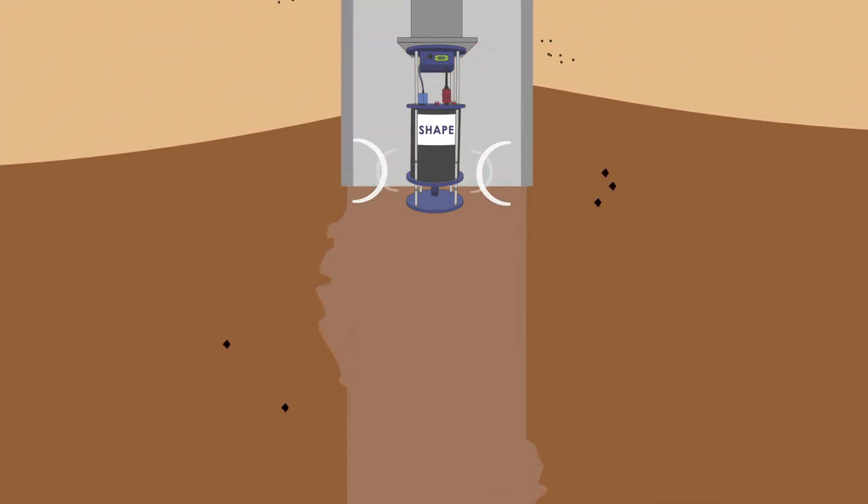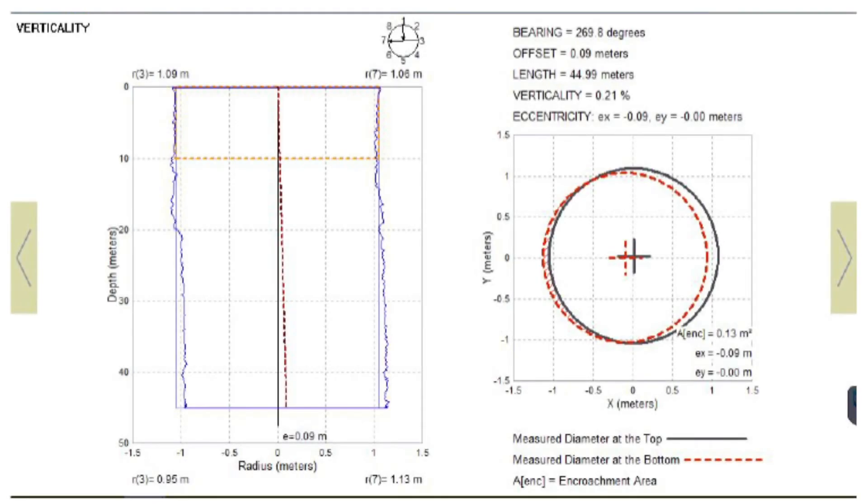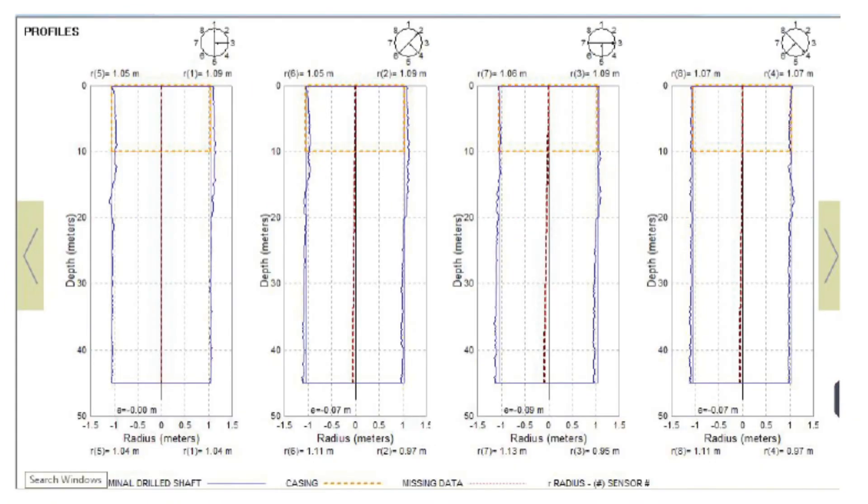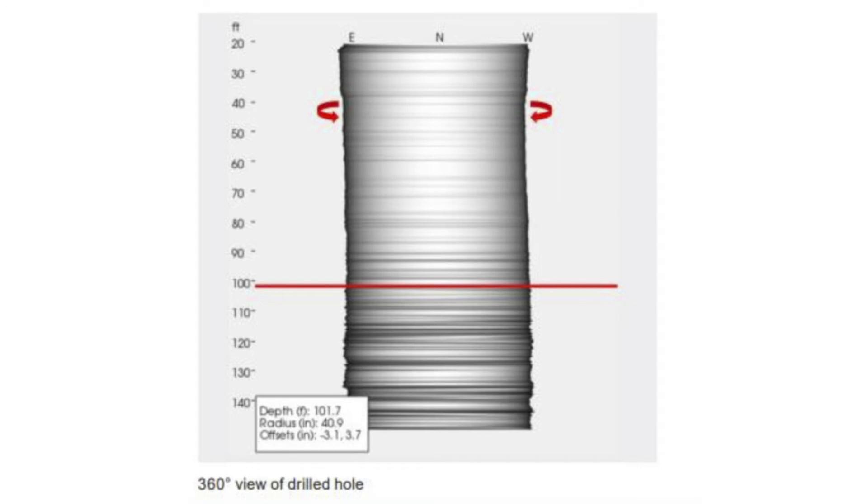The measured reflection time from the excavation sidewalls is used to determine the shaft verticality, radii, shape, and drilled hole volume of wet cast drilled shafts.